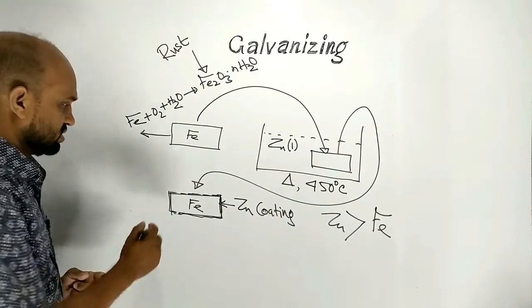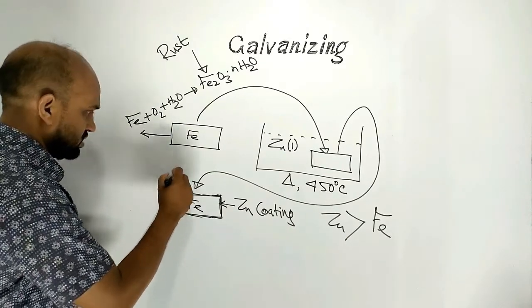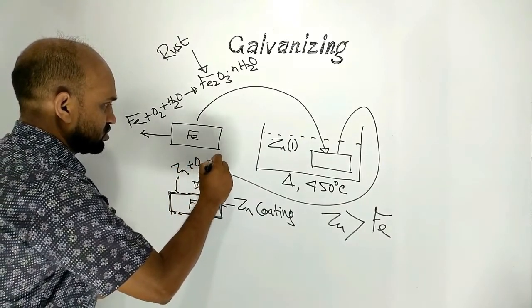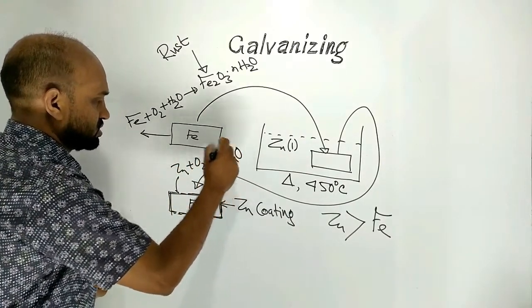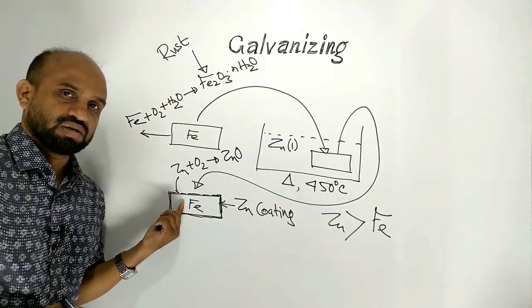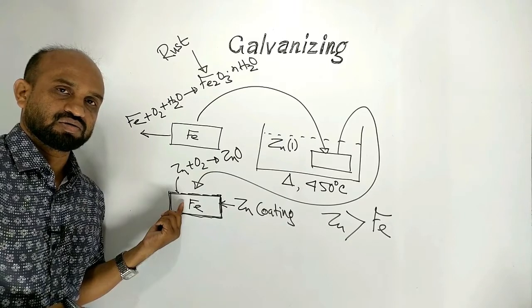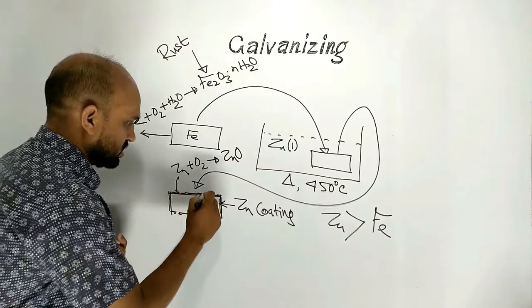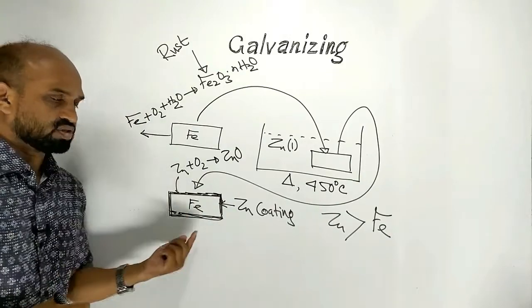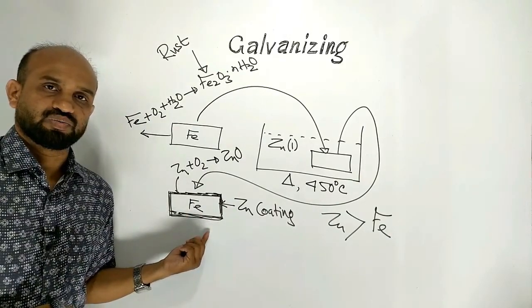Here zinc reacts with oxygen to form zinc oxide. Actually layer of zinc converts to zinc oxide. This is actually layer of zinc oxide.